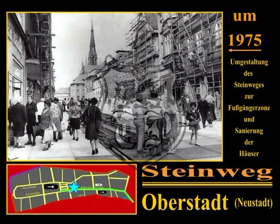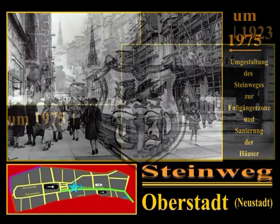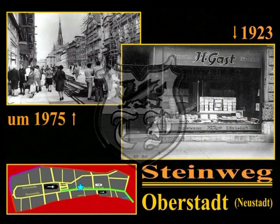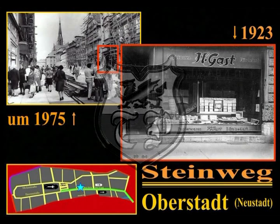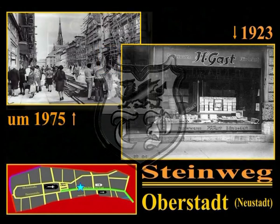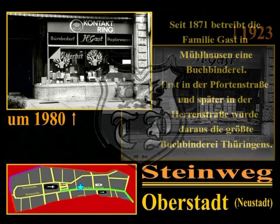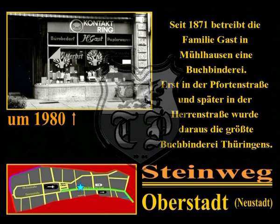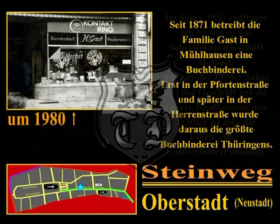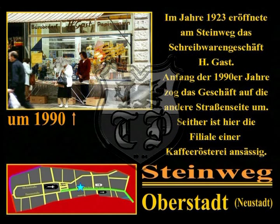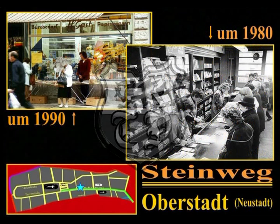Langsam nähern wir uns der Grasegasse und dem ehemaligen Krautmarkt an der Nordseite des oberen Steinwegs. Neben dem Eckhaus, dem ehemaligen Stadtcafé, steht das Haus Nummer 75; hier war fast 75 Jahre lang das Papierwarengeschäft Gast. Seit 1871 betrieb die Familie Gast in Mühlhausen eine Buchbinderei, zunächst in der Pfortenstraße und später in der Herrenstraße – daraus wurde die größte Buchbinderei Thüringens. Im Jahre 1923 eröffnete am Steinweg 75 das Schreibwarengeschäft H. Gast, das H. steht für den Gründer Heinrich Gast. Anfang der 1990er Jahre zog das Geschäft auf die andere Straßenseite; seither ist hier die Verkaufsfiliale einer Kaffeerösterei ansässig.